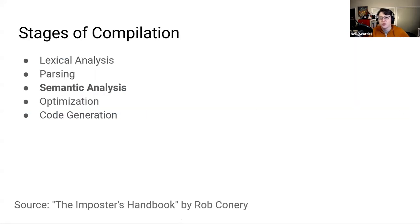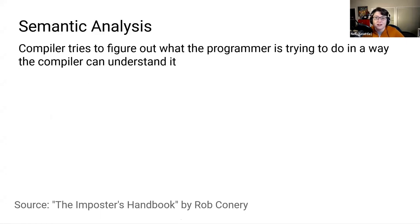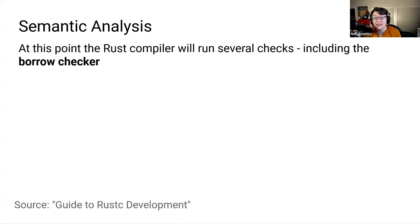And that brings us to the third stage — and this stage is big in the Rust compiler — semantic analysis. This is where the compiler tries to figure out what the programmer is trying to do in a way the compiler can understand it, then translate it into machine code. After it's lowered the HIR into the MIR, the Rust compiler will run several checks on the code, including the borrow checker. We'll come back and dive deep into that borrow checker in just a few moments.